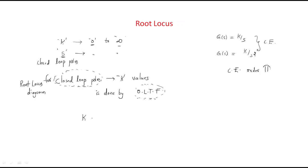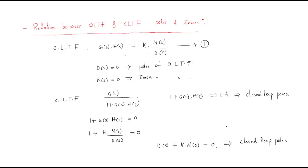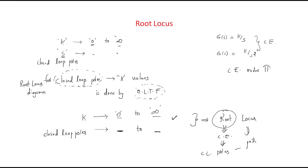Root locus means studying the system by giving k from 0 to infinite and observing how the closed-loop poles behave. The word 'root' refers to the roots of the characteristic equation — the poles — and 'locus' simply means path. So root locus gives the path of the closed-loop poles. By using this concept, we will do some numericals and study system stability.